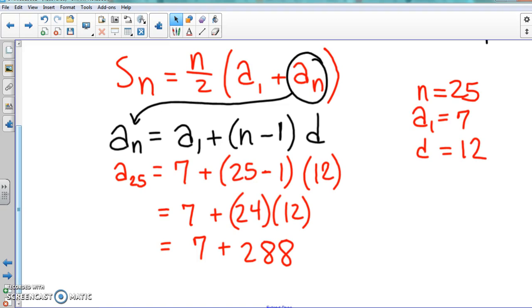Alright, so let's go ahead and just add 7 to that - that gives us what a_25 is. Seven and 288 is 295. So we found what a_n is.